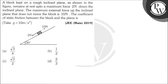A block placed on a rough inclined plane, as shown in the figure, remains at rest up to a maximum force of 2N down the inclined plane. The maximum external force up the inclined plane that does not move the block is 10N. Find the coefficient of static friction between the block and the plane.